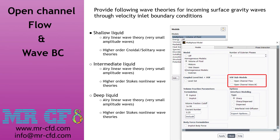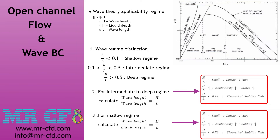The next option is the VOF model's ability to model free surface flows such as flow in canals, oceans, or inside any container where liquid and gas flow with one distinct interface. Fluent also has the ability to model different types of wave boundary conditions such as shallow, intermediate, and deep liquids based on wave theories. The most important parameters to consider when modeling different types of waves are wave height, liquid depth, and wavelength. Based on the values and ratios of these parameters, three different regimes can be defined: shallow, intermediate, and deep.